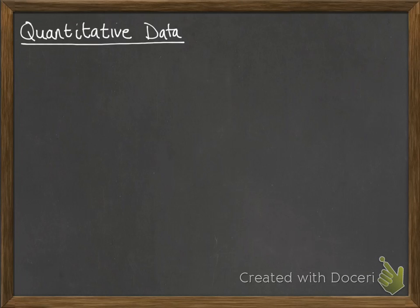Let's have a look at quantitative data. This is data that has a numerical value and it can be either discrete or continuous.